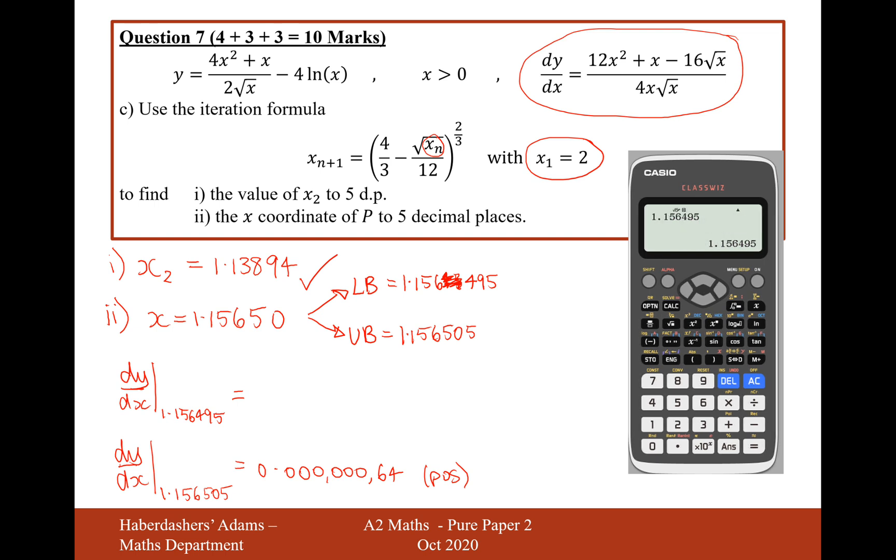And now let's move on to the lower bound one, so 1.156495, and substituting the lower bound, and that's going to be minus 0.00000422, and that's negative.